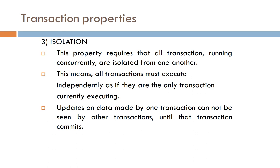The third is Isolation. This property requires that all transactions running concurrently are isolated from each other — all transactions must execute independently. Updates made by one transaction cannot be seen by other transactions until that transaction commits, preventing problems caused by multiple transactions accessing the same data simultaneously.